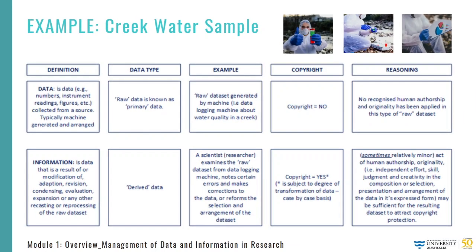I just want to go over the example on screen, taken from the Australian Research Data Commons Research Data Rights Management Guide. In Australia, despite many legal cases to the contrary prior to 2010, a raw dataset generated by a data logging machine about water quality in a creek will not attract copyright protection, even if there has been considerable expense, skill and effort in siting the data logger that generates the data. This is primarily because there is no recognized human authorship and originality in this type of raw dataset.